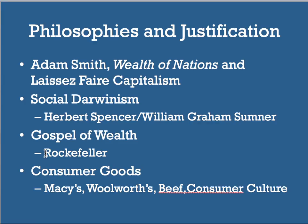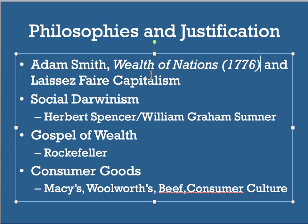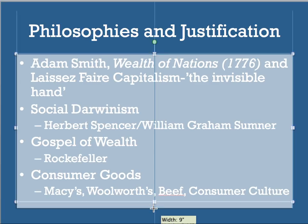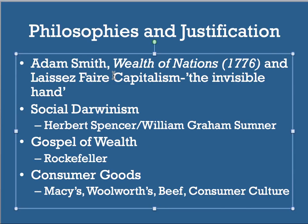A couple of philosophies justify the huge expansion and consolidation of wealth. The first is Adam Smith's Wealth of Nations, published in 1776, which argues the government should play no role in the economy — instead, the economy will be regulated by the invisible hand of supply and demand. When people want more of something, demand and supply increase; when they want less, supply decreases or prices change. Businesses are motivated by self-interest to offer the best goods and services.